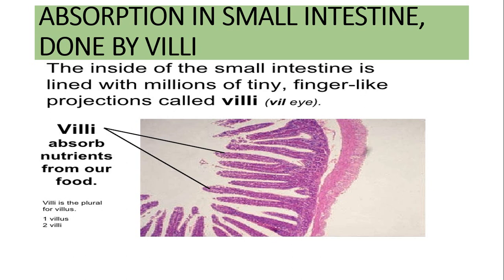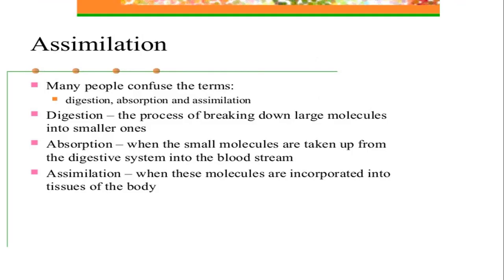Absorption in the small intestine is a very important process and it is done by villi. These villi are finger-like projections. The inside of the small intestine is lined with millions of tiny finger-like projections called villi. Villi absorb nutrients from the digested food. Note: villus is the singular form and villi is the plural.